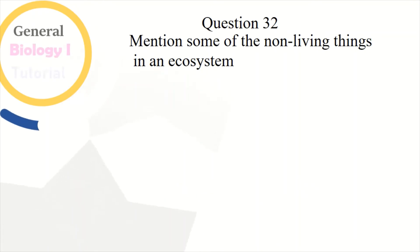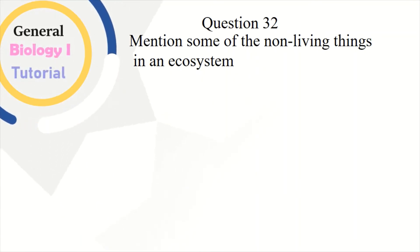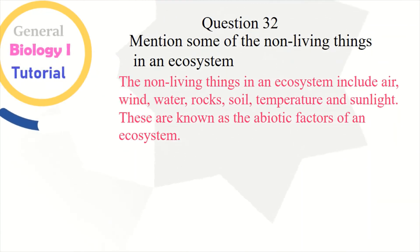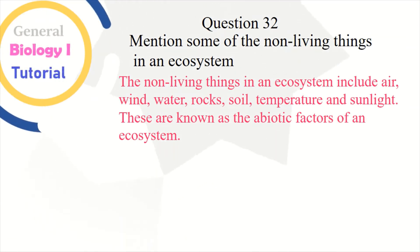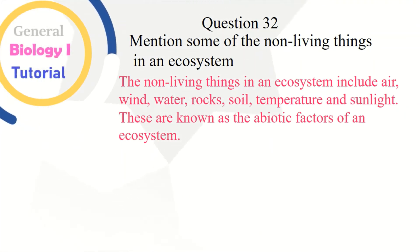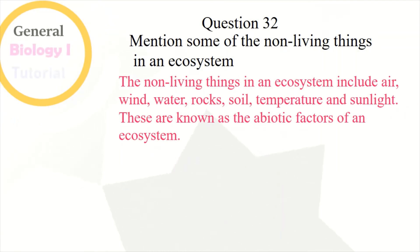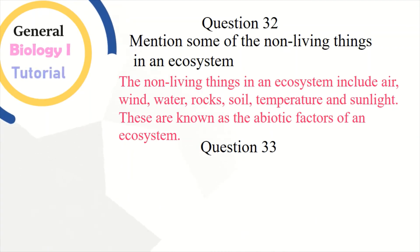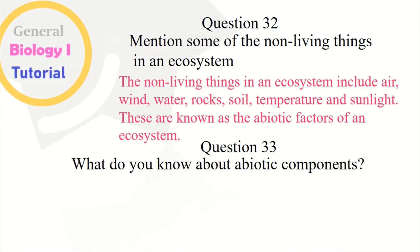Question 32: Mention some of the non-living things in an ecosystem. The non-living things in an ecosystem include air, wind, water, rocks, soil, temperature, and sunlight. These are known as the abiotic factors of an ecosystem. Question 33: What do you know about abiotic components?